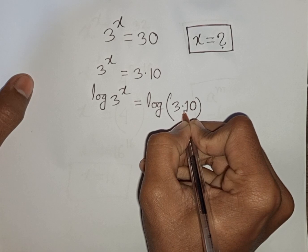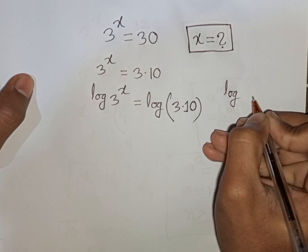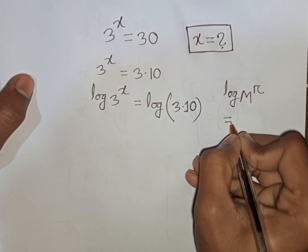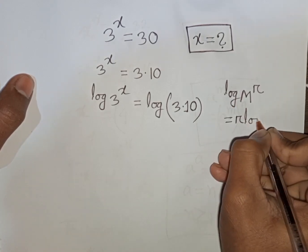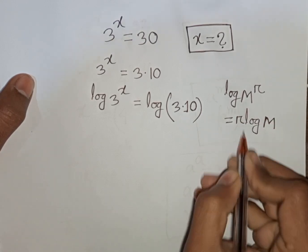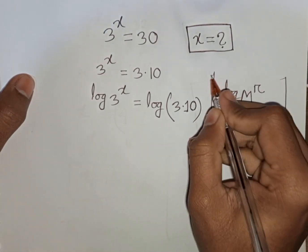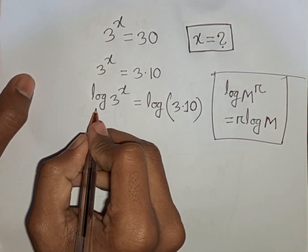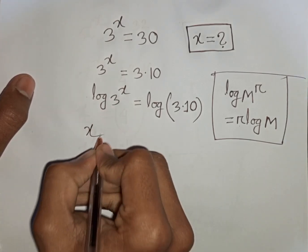Now here you can apply the rule that log M power r is equal to r log M. That means this power r moves to the base. So according to this rule, you can compare here. This power x will move to the base. You can write here x log 3.